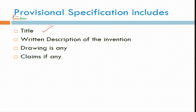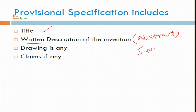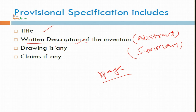The provisional specification includes: first, the title you want to give to your patent or invention; second, a written description — it may be an abstract or summary, possibly of one page or two pages. The most important thing is to file the patent quickly, as that matters a lot. A written description must be there and a drawing, if any. You can also submit drawings if you think they are necessary for your patent or if you want to file a claim.